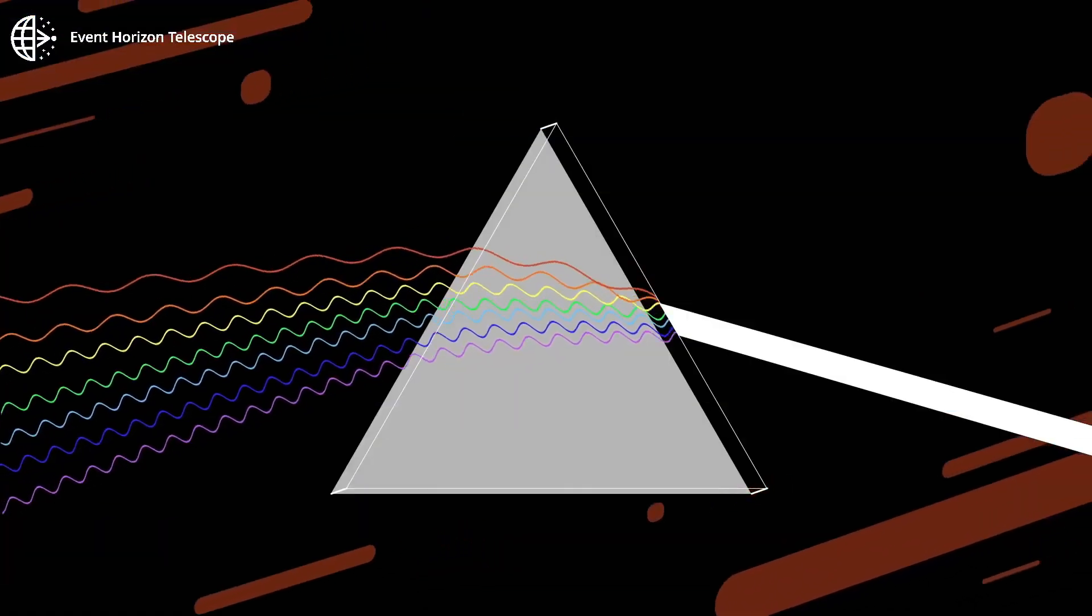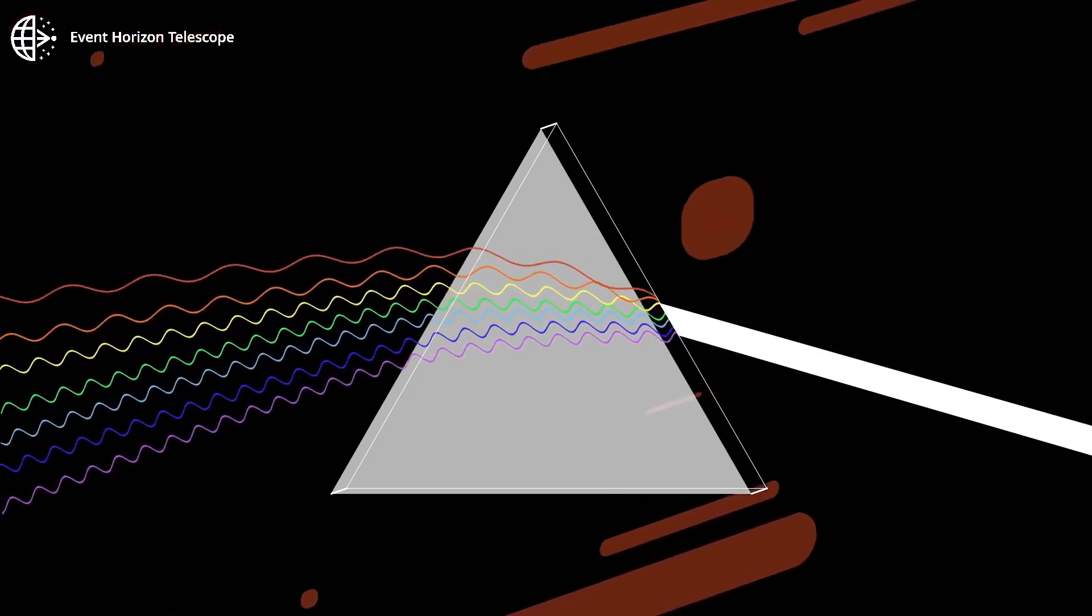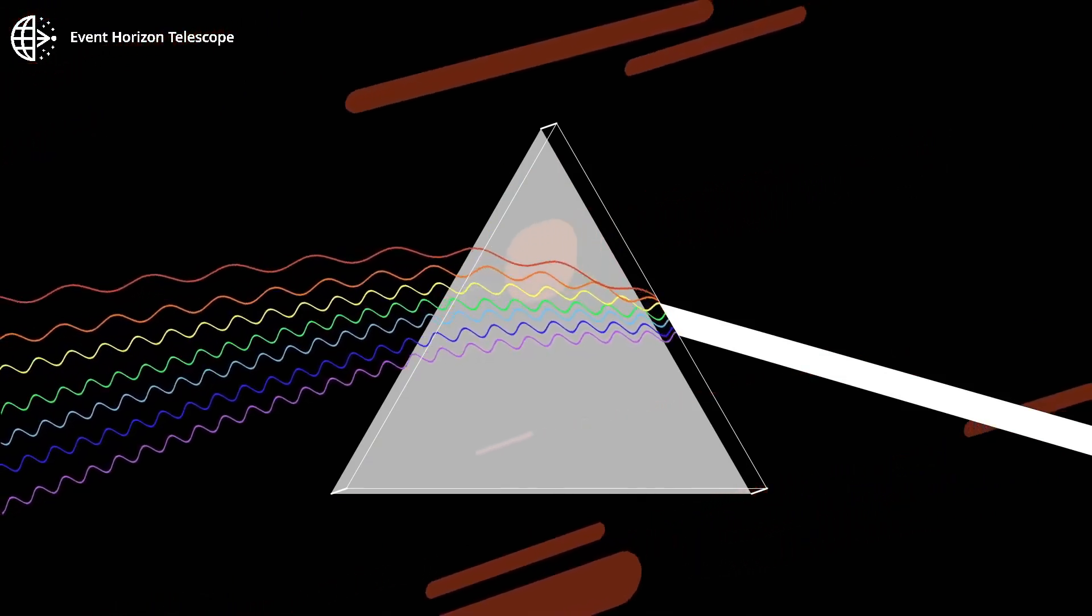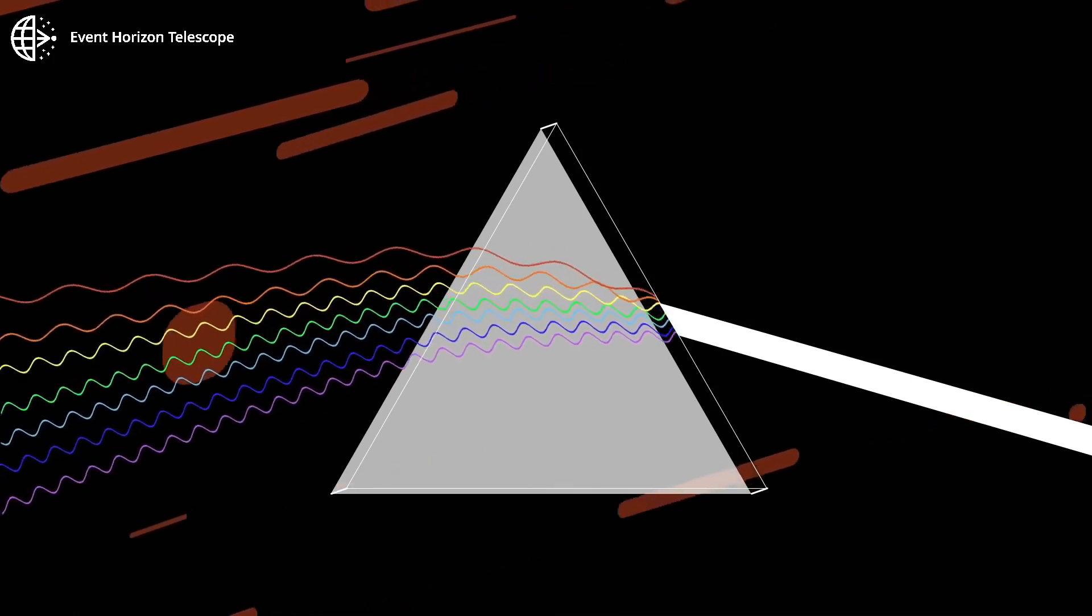We see different frequencies of that oscillation as different colors. The electric field component of a light wave can oscillate in any direction perpendicular to the direction of travel.